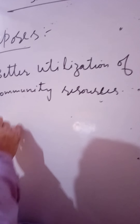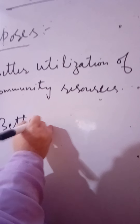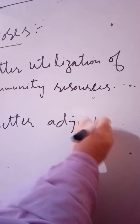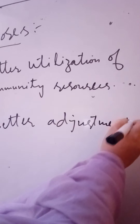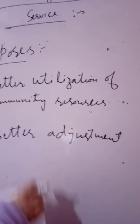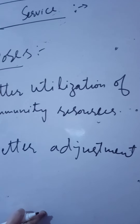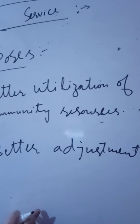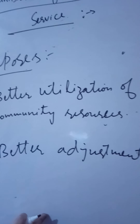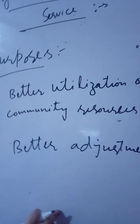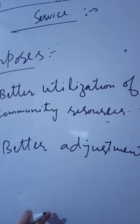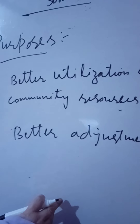Next, we need to organize guidance services in order to make a person fully adjusted. The purpose of organizing guidance services is better adjustment. We have to make a person fully adjusted with the society, as we cannot live apart from society — we have to live with society. So we need to make a person fully adjusted, and for better adjustment we need to organize guidance services.